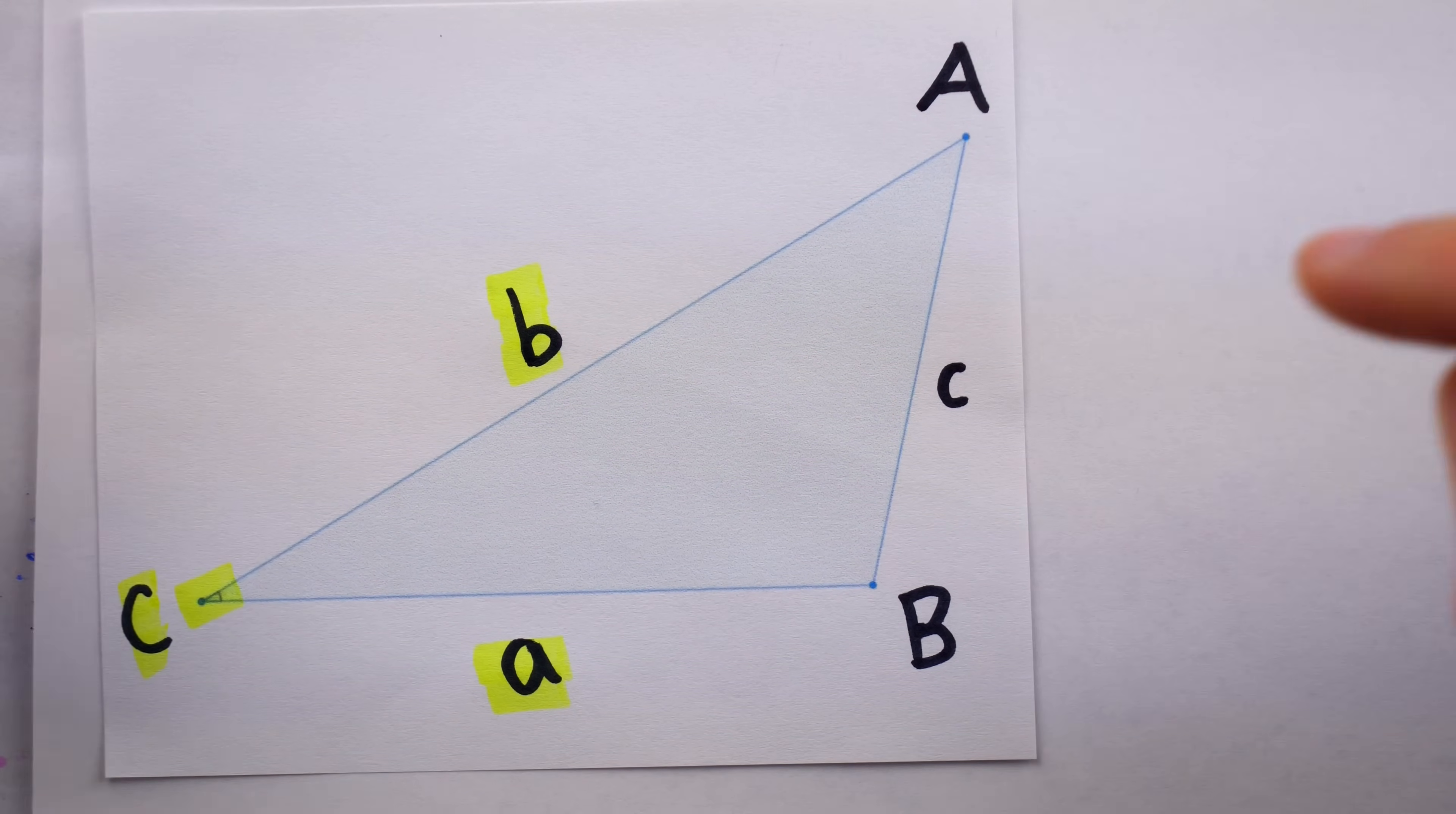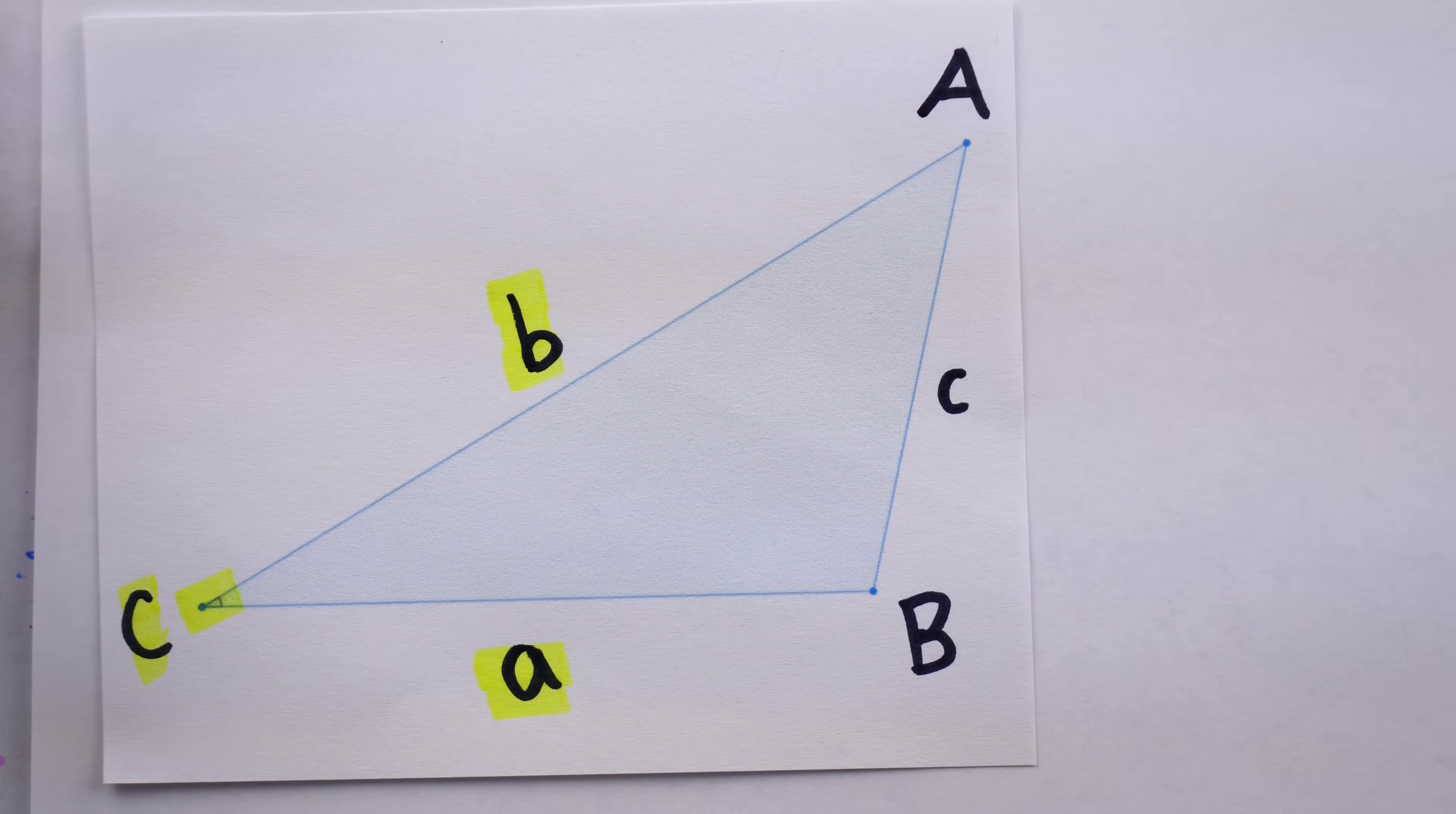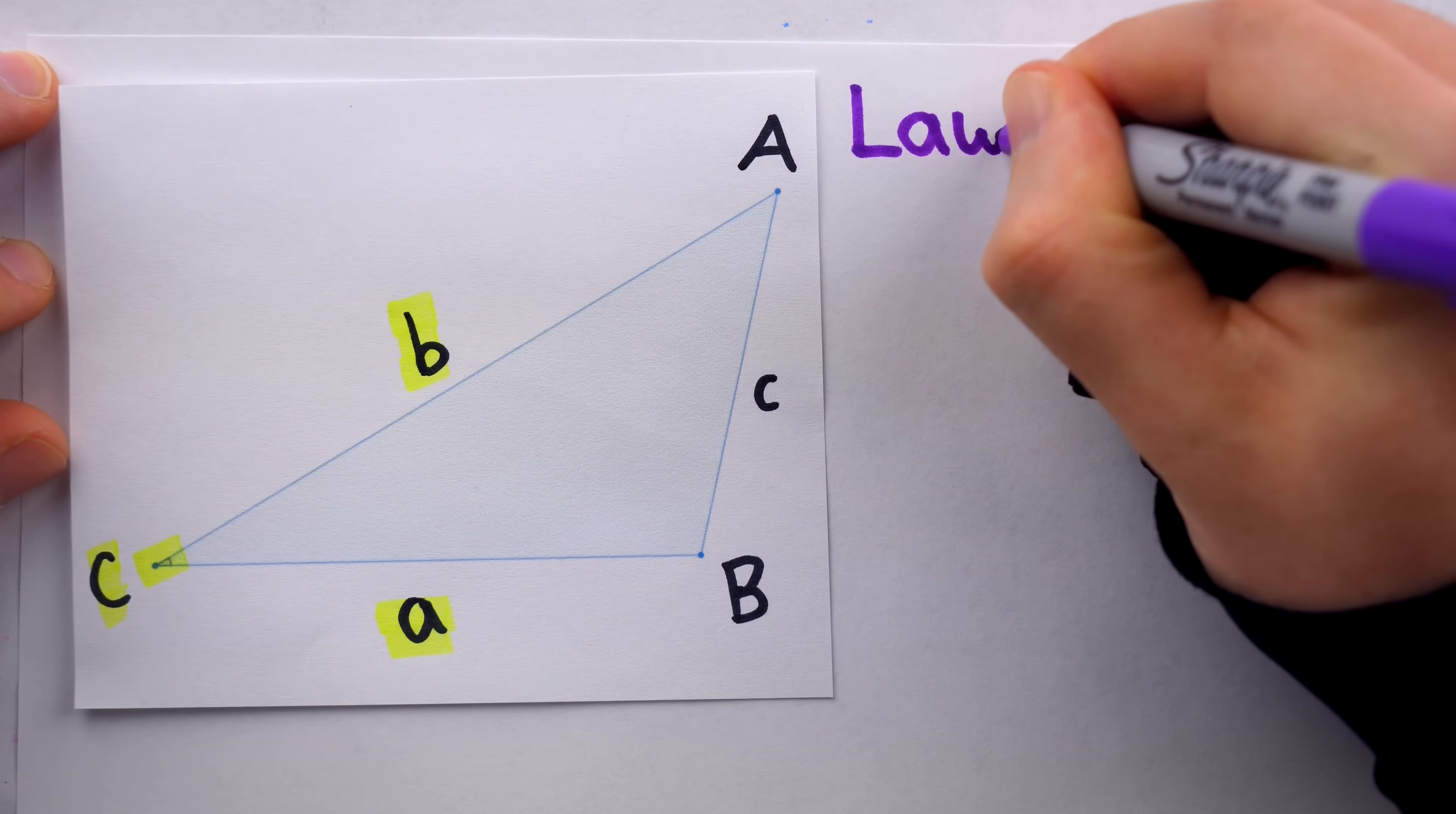So what if, like with the Pythagorean theorem, we do know the angle between our two sides, it's just not 90 degrees? Here's a triangle, and we'll name its three vertices A, B, and C. As is tradition, we'll name the sides opposite the angles with the lowercase of the corresponding letter.